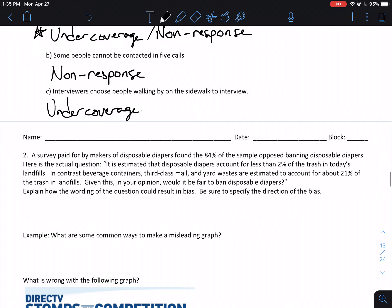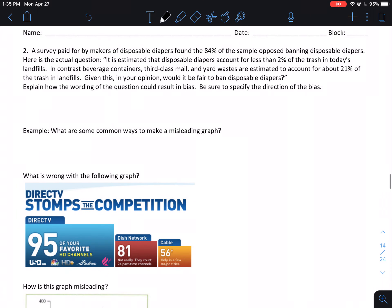So a survey paid for by the makers of disposable diapers found that 84% of the sample opposed banning disposable diapers. Here's the actual question that they asked. It is estimated that disposable diapers account for less than 2% of the trash in today's landfills. In contrast, beverage containers, third-class mail, and yard waste are estimated to account for about 21% of the trash in landfills. Given this, in your opinion, would it be fair to ban disposable diapers? Explain how the wording of this question could result in bias.